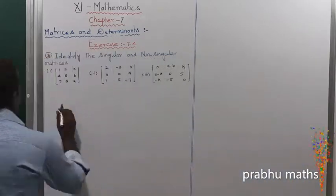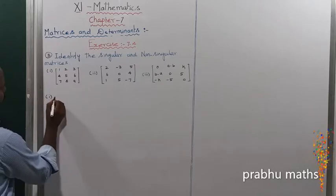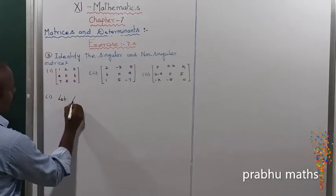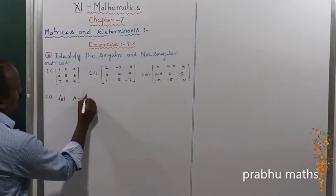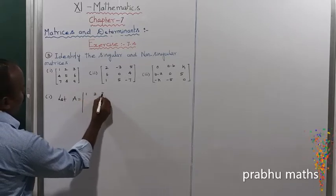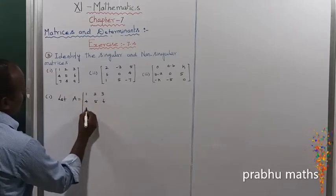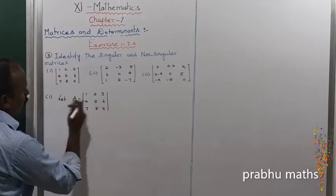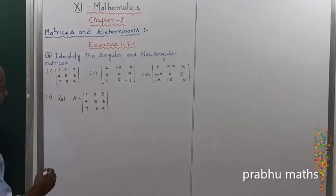So, the Third Sum, First Subdivision. Let us consider A is equal to the matrix with entries 1, 2, 3, 4, 5, 6, 7, 8, 9. That is the given matrix considered as A.